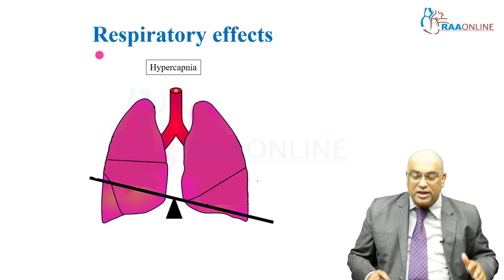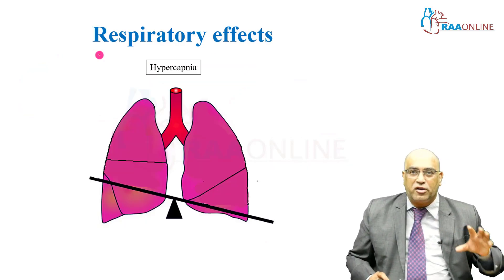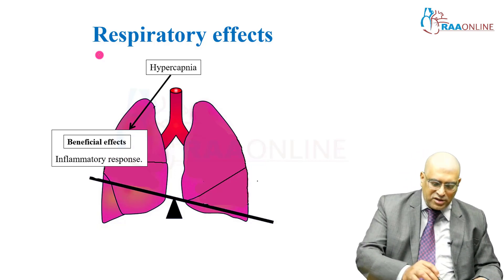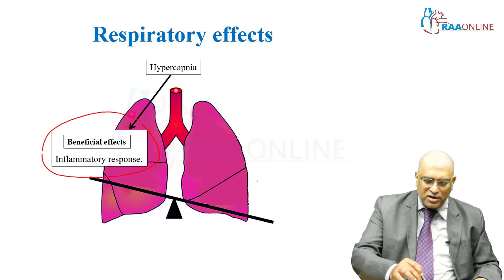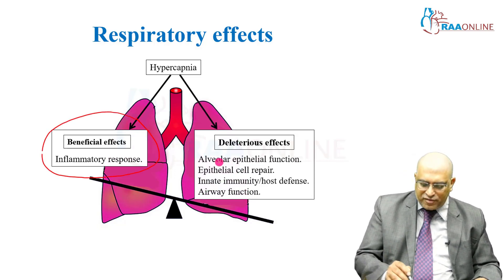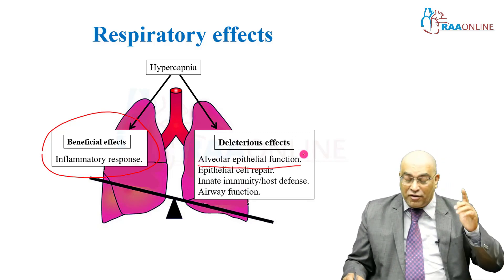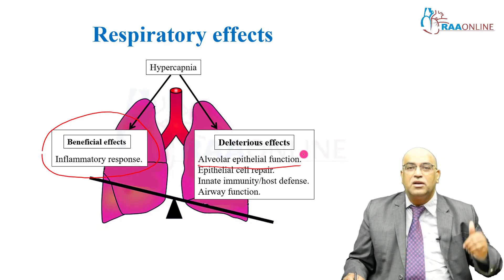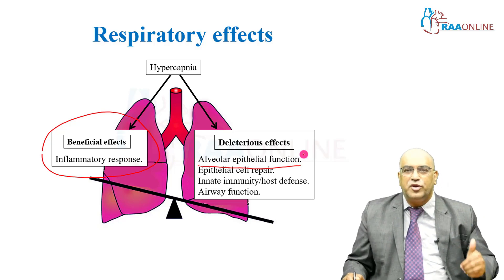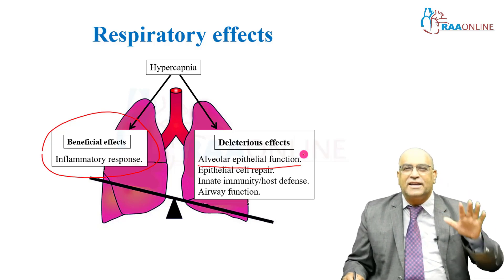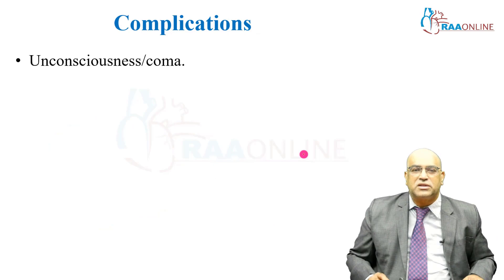To summarize the respiratory effects of hypercarbia: the beneficial effect is reduction of inflammatory response. The deleterious effects are that it affects alveolar epithelial function, impairs epithelial cell repair, reduces innate immunity and host defense, and decreases airway function.